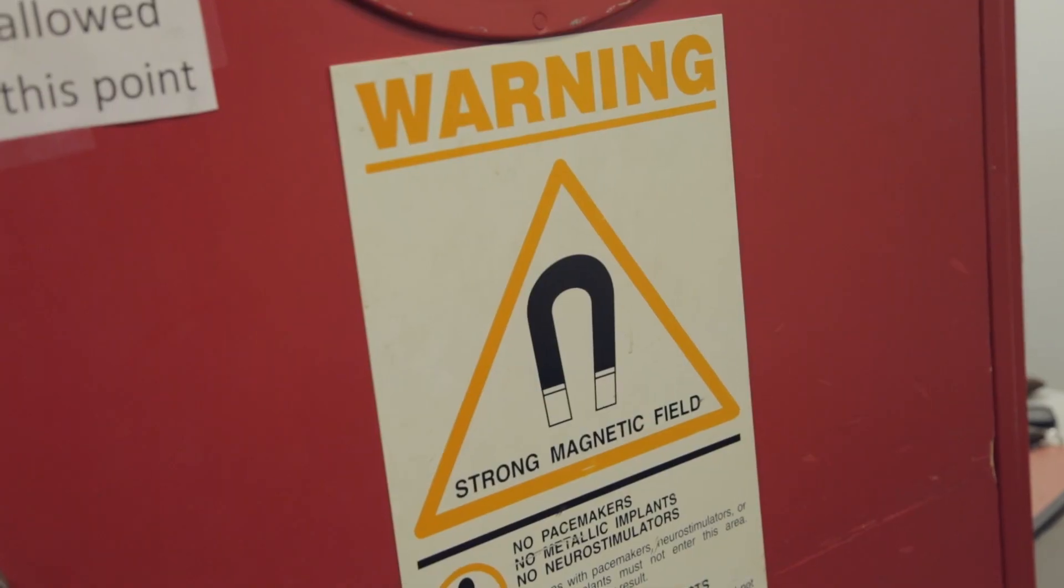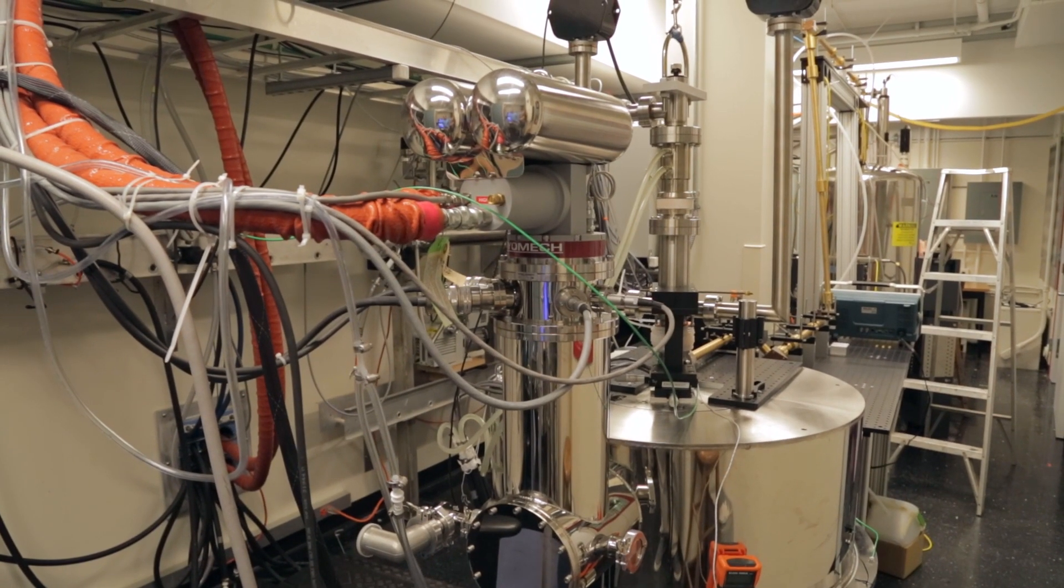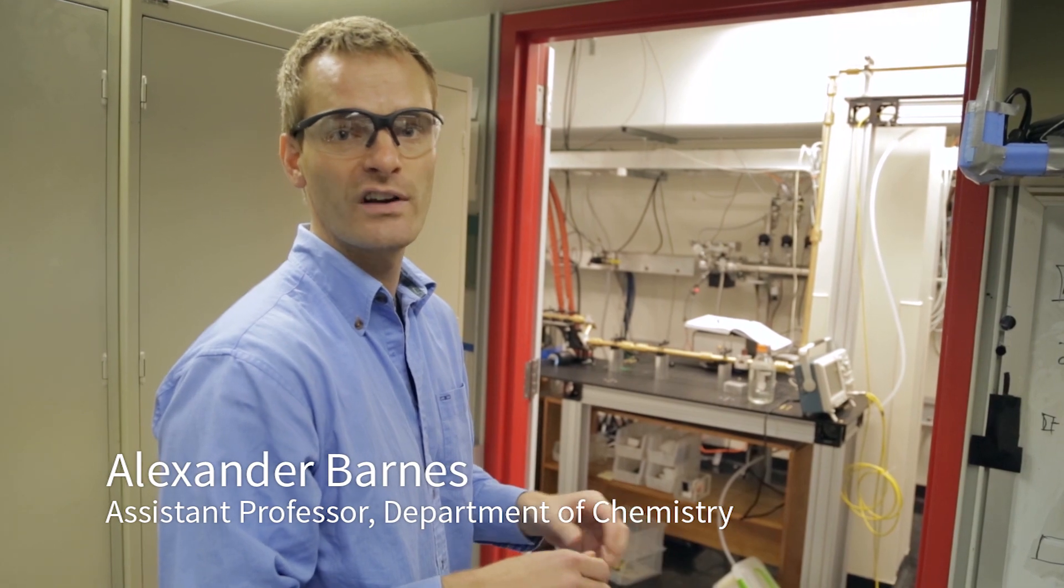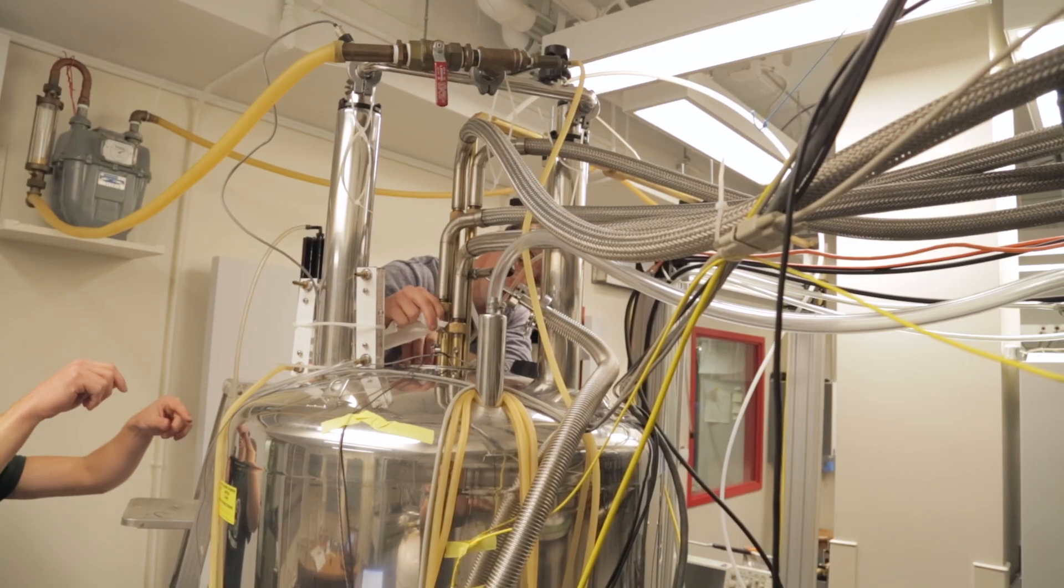So this is the first time we're turning on the DNP spectrometer. The gyrotron is now putting about 10 or 20 watts of power at 198 gigahertz. This is the first time that we're cooling the sample also.